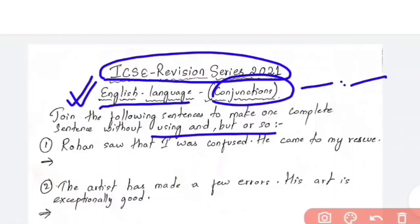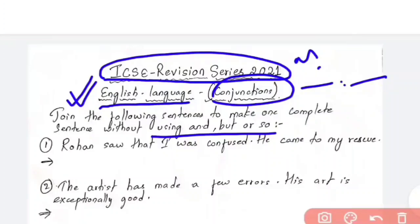There are other conjunctions as well. 'And', 'but', 'or', 'so' are also examples of conjunctions, but other examples include 'as', 'because', and more. These are all examples of conjunctions. Now we are going to practice and discuss questions, so let us begin.